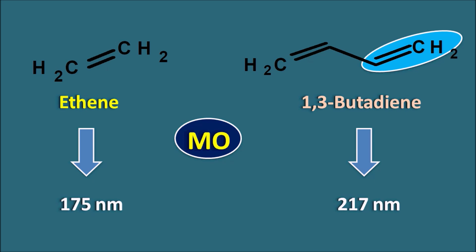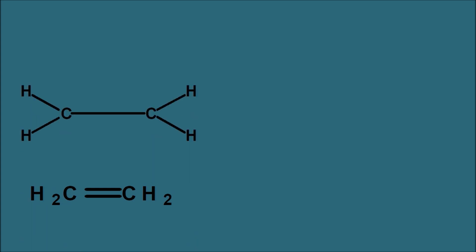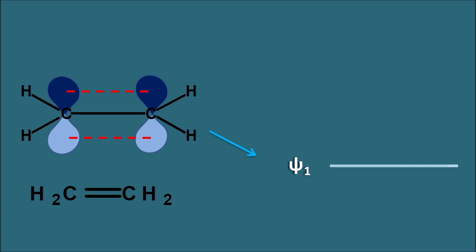Let us see the molecular orbitals of both ethene and 1,3-butadiene. This is the structure of ethene. When we see the bonds present in ethene, the carbon-carbon has single bonds and the pi bond is going to be formed by the overlap of p orbitals. When these atomic orbitals overlap to form pi orbitals, they can produce molecular orbitals. Ethene can form two molecular orbitals. The first is psi 1, which has less energy and more stability — it can be considered the ground state. Similarly, ethene can form another orbital, psi 2, which has high energy and is not stable — it can be considered the excited state.